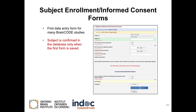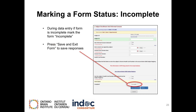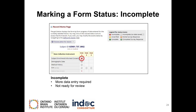Subject Enrollment and Informed Consent Forms. The first form within the visit schedule for most studies is the Subject Enrollment/Informed Consent form. Subjects are only confirmed to the database once the first form has been completed and saved. Marking a form's status as incomplete can be done when responses are not completed within a form. Select Incomplete from the drop-down menu and press Save and Exit Form to save the responses that were completed. On the visit schedule grid, the form will be marked with a red bubble.